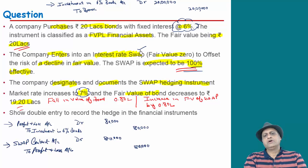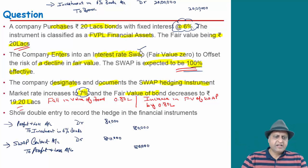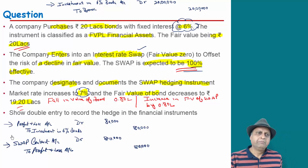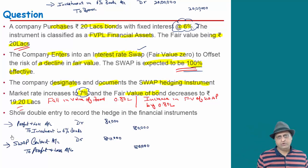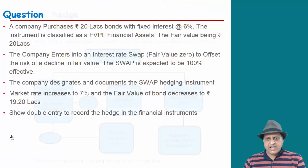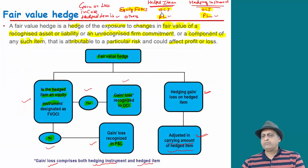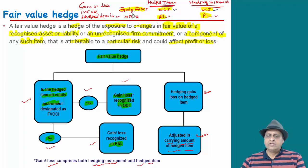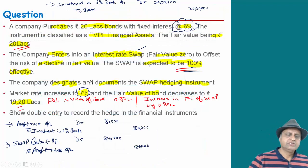All the details of the interest and hedging-related entries are these two. This is our fair value hedge. The gain and loss transfer to profit and loss — if the equity instrument is designated as fair value through OCI, then it goes to other comprehensive income instead of P&L.